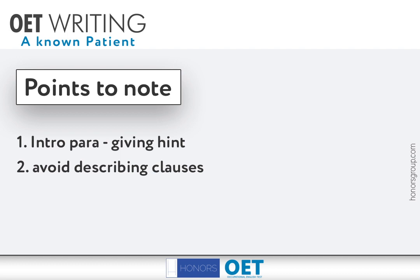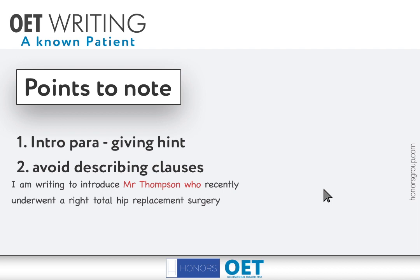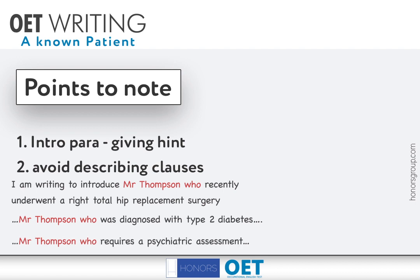You can write an introduction which hints that the patient you refer is a known patient to the reader. Well, if that's the case, you should make sure that you avoid any relative clauses — relative clauses which describe the patient, especially the word 'who'. Like: 'I'm writing to introduce Mr. Thompson, who recently underwent a right total hip replacement surgery.' 'Mr. Thompson, who was diagnosed with type 2 diabetes.' 'Mr. Thompson, who requires a psychiatric assessment.' Such sentences or clauses with the relative pronoun 'who' to tell diagnosis or complaint are not recommended. You have to inform about the diagnosis or complaint in a different manner, but not using a clause which describes the patient, because you do not need to describe a patient or client if he or she is known to the reader.